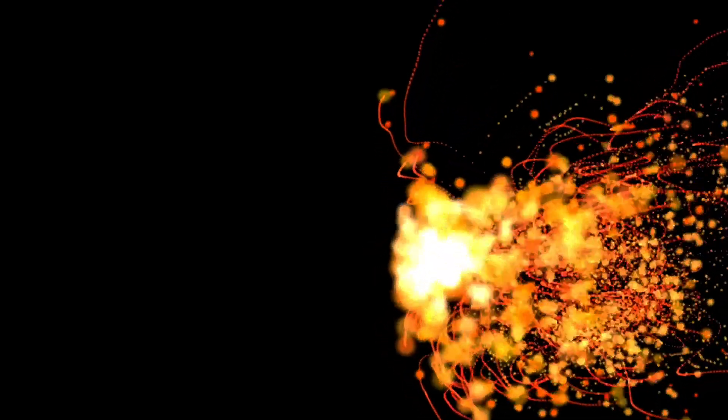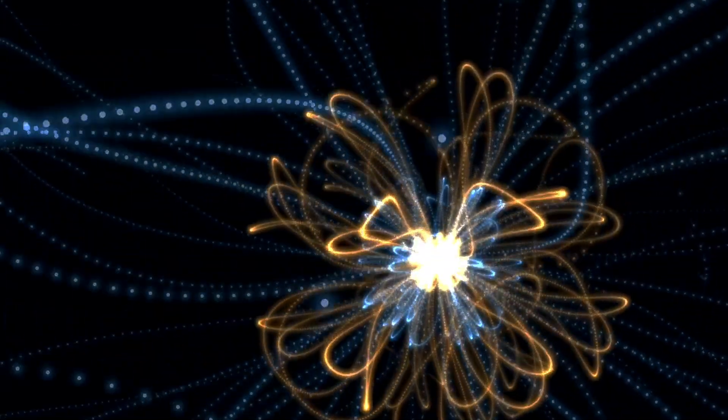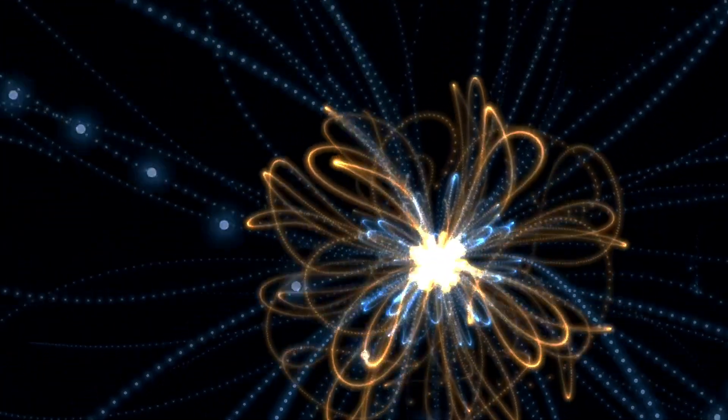These fluctuations can have real consequences. One of the most intriguing is the possibility that they could create particles, according to Einstein's famous equation E=MC². Energy and mass are interchangeable, so a quantum fluctuation with enough energy could, in theory, create a particle. It's like the universe is constantly playing a cosmic slot machine, with particles popping in and out of existence.